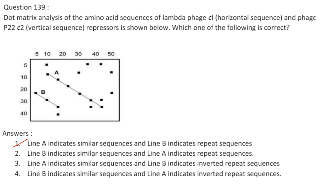Dot matrix analysis of the amino acid sequences of lambda phage CI (horizontal) and phage P22 (vertical) repressors is shown. The two lines are parallel to each other and line B is parallel to the main diagonal (line A). Line A indicates similar sequences and line B indicates repeat sequences. Answer is option 1.